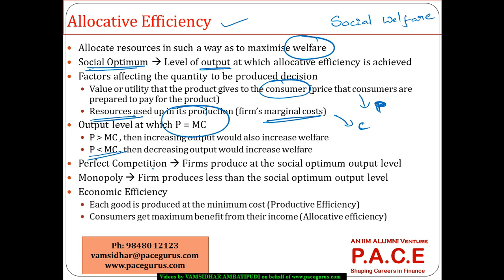In the perfectly competitive world, firms always operate at the social optimum output level itself. But in case of monopoly, they can still produce much less than the social optimum output. If they produce at the social optimum output where price becomes equal to MC, they can in some cases make a loss. They can operate at that level only if they receive some kind of subsidies from the government. They are generally not interested in operating at that allocative efficiency level, whereas in perfect competition firms operate at the allocative efficiency level.